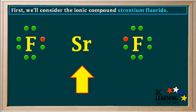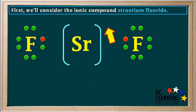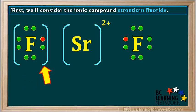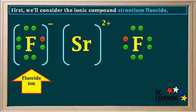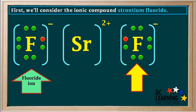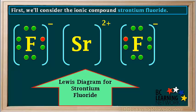So the strontium atom has lost two electrons, so it will become a cation. Therefore, we'll draw square brackets around it. And because it lost two electrons, its net charge will be positive two, so we write 2+ here on the top right. Looking at this fluorine, it has gained one electron, so it has formed an anion with a charge of negative one. So we draw a square bracket around it and give it a negative charge. It is now called a fluoride ion rather than a fluorine atom. We do exactly the same thing to the other fluorine, adding a square bracket and a negative charge. So this is our Lewis diagram for strontium fluoride.